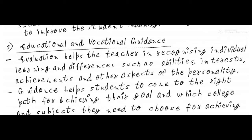Next is educational and vocational guidance. We provide educational and vocational guidance for children. Evaluation helps the teacher in recognizing individual learning differences such as abilities, interests, achievements, and other aspects of personality. We can understand what the child's interests, abilities, and achievements are.